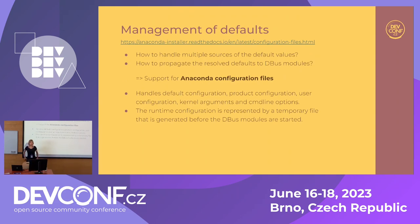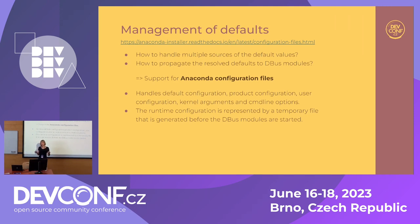Another issue was management of default values. The problem is we have a lot of sources of defaults: Anaconda has some ideas what the defaults should be, but products have other ideas, and then you have kernel arguments and boot options that can override them. We didn't want to propagate all these sources to the DBus modules. Instead, we introduced Anaconda configuration files that are just text-based. In very early stages we process all the sources, generate a temporary runtime configuration file, and then start the DBus modules. The first thing a DBus module does is look for this runtime configuration and use only that — so it doesn't have to care about other sources.